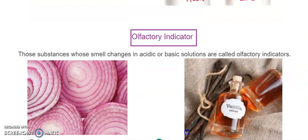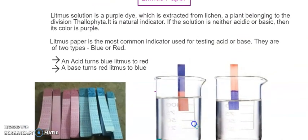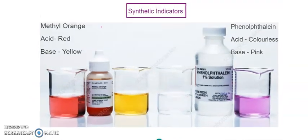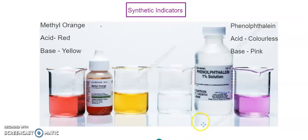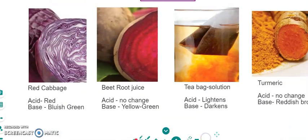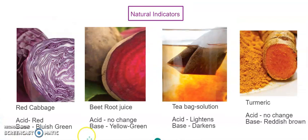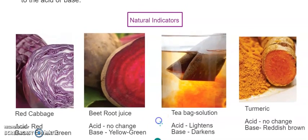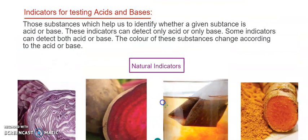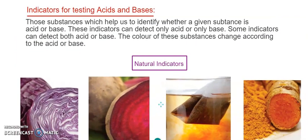In this video, we talked about the indicators — the natural indicators, the olfactory indicator, and litmus paper which is a natural indicator. The synthetic indicators used are phenolphthalein and methyl orange. This is just the introduction to acids and bases. In the next video, we will cover reactions of acids and bases with metals, non-metals, oxygen, and water. Hope it is clear. Thank you.